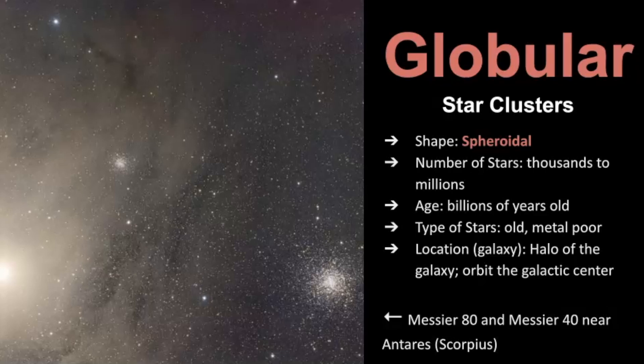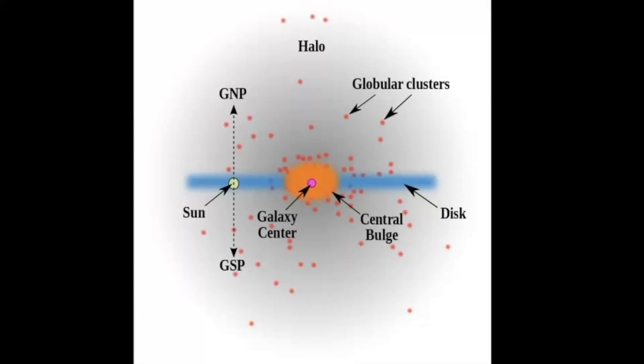So here you can see Messier 80 and Messier 40. This is near Antares, so that's the heart of the Scorpion. I've got a whole video on Scorpius, so go see that. And again, just to review where its location would be in the galaxy, the globular star clusters orbit around the galactic center. And they're typically farther away in distance.